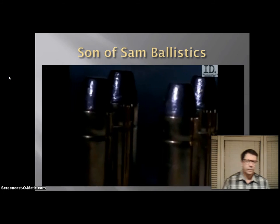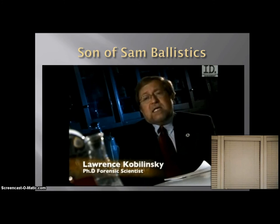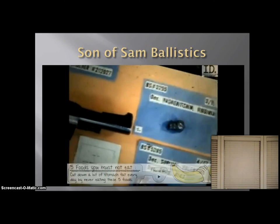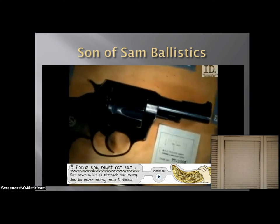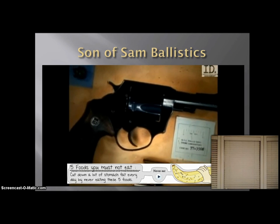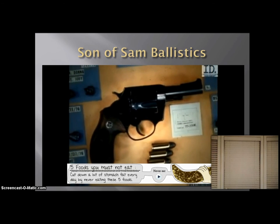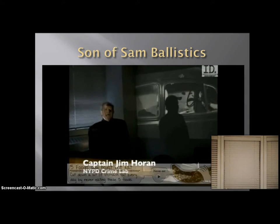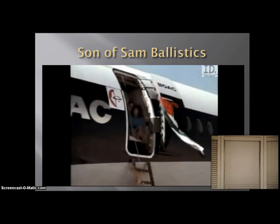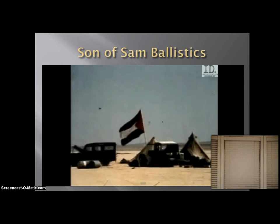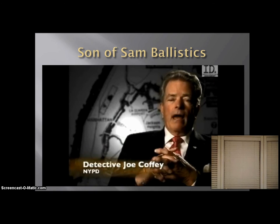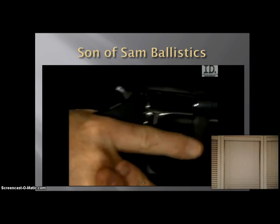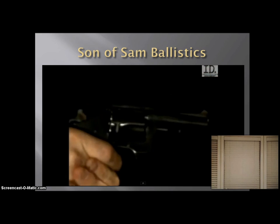We know from ballistics studies that the bullet fired out of a particular gun has very, very unique markings. The bullet from the Voscarichian case matched the one that killed Donna Loria. It came from a Charter Arms Bulldog gun, .44 caliber. The particular gun involved was designed for sky marshals. During the 70s there was a rash of airplane hijackings, and air marshals were put on flights all over the world, but they had to come up with a weapon that they could fire inside of an airplane without causing the plane to go down.